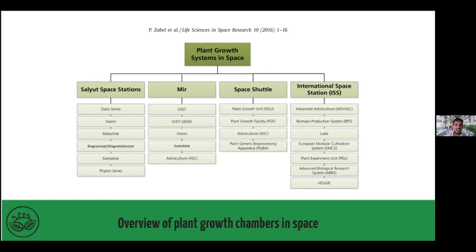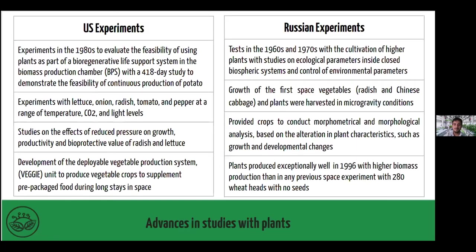We have started especially with good studies from the Vaison growth chamber and also the Bios block. Until now we have had the Lada greenhouse and also the Veggie on the ISS. From the U.S. side, there were good experiments to evaluate the feasibility of using plants as part of bioregenerative life support systems in space, especially in the BPS — the Biomass Production Chamber — a terrestrial growth chamber here on Earth, particularly studying potato production in a 418-day study.